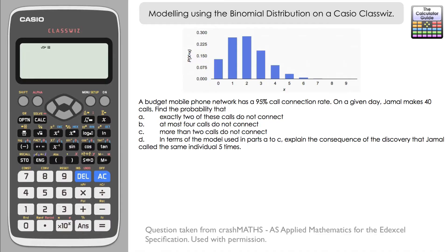A budget mobile phone network has a 95% call connection rate. On a given day, Jamal makes 40 calls, find the probability that, and then we've got four questions to answer.